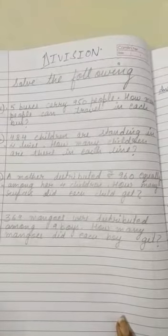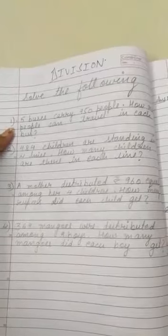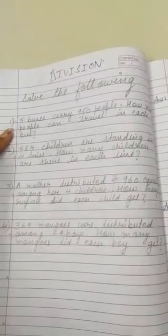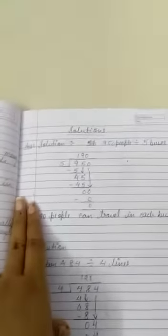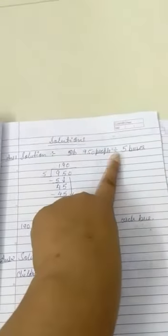So here we start with the first question: five buses carry 950 people. In five buses, the number of people were 950, so they are asking how many people can travel in each bus. So in a single bus, how many people can travel?